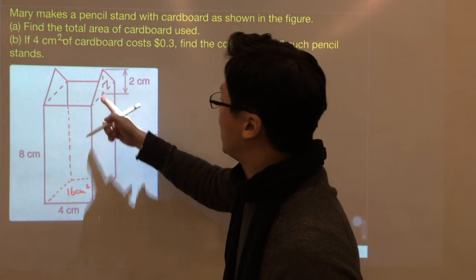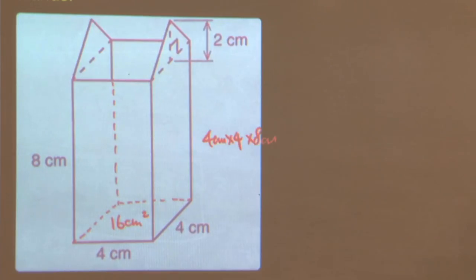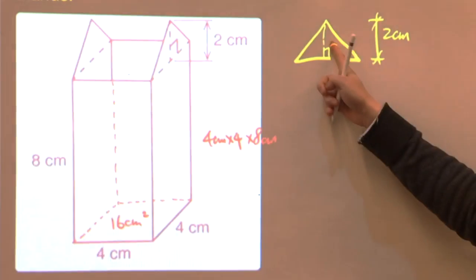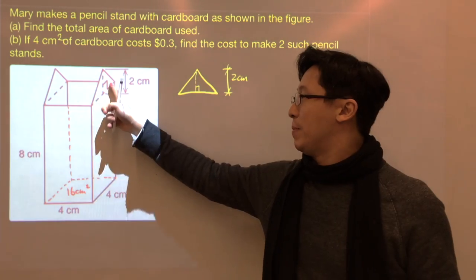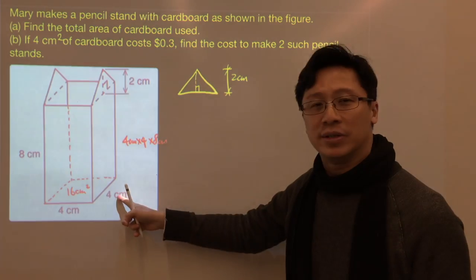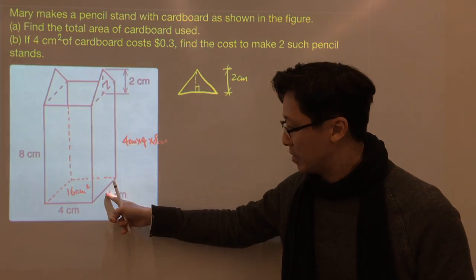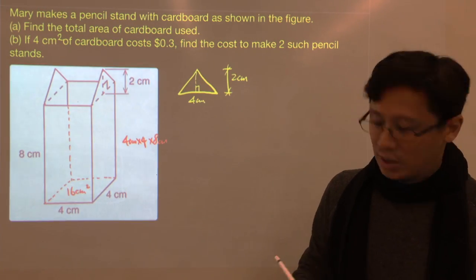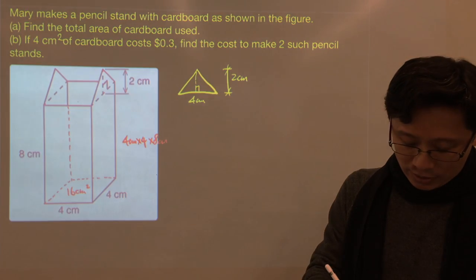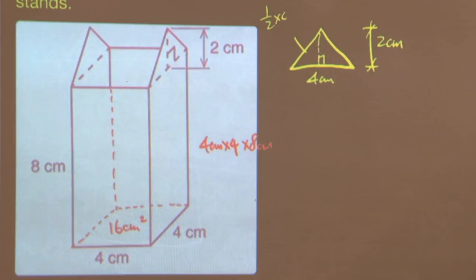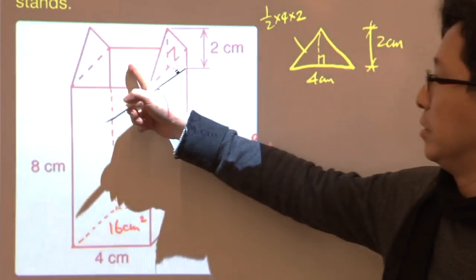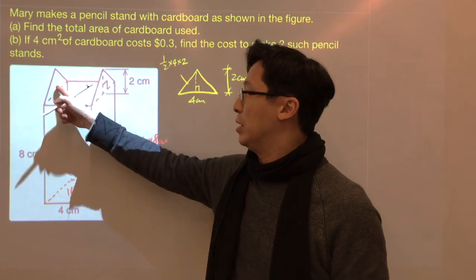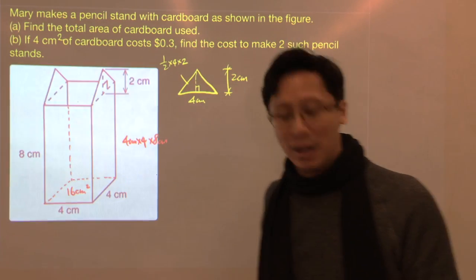And what about these two triangles? We can draw the triangle in this way. The height is 2 cm. What about the base of this triangle? Same as, yeah, the base is 4 cm. And therefore the area will be 1 over 2 times 4 times 2. So the area of this small triangle, and we need to multiply this by 2.